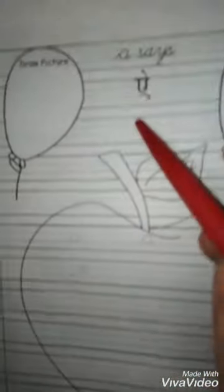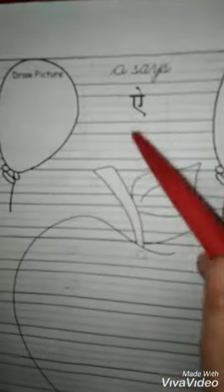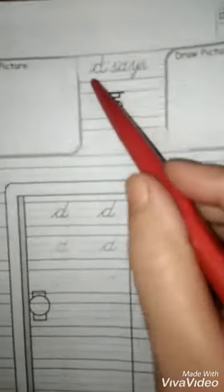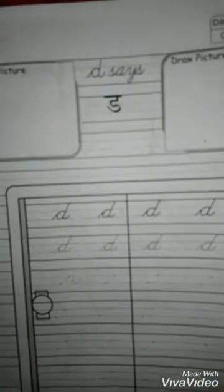A says A. Apple. A says A. D says D. D says D, just like drum.